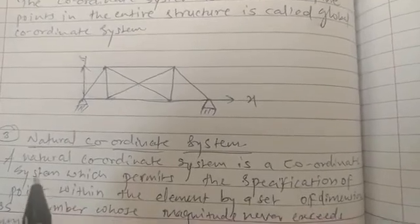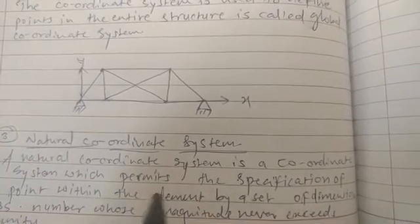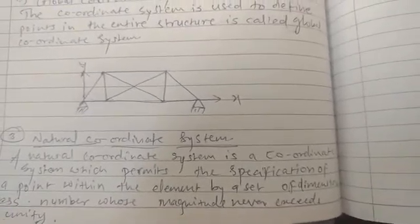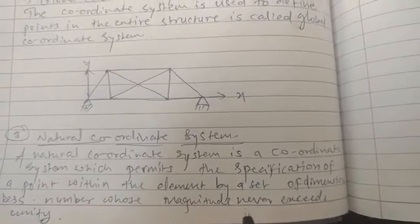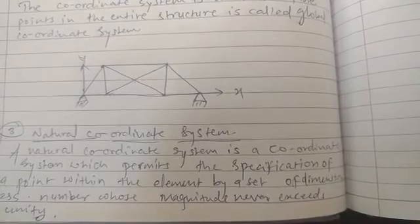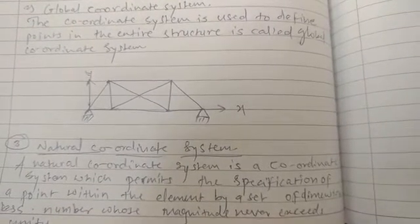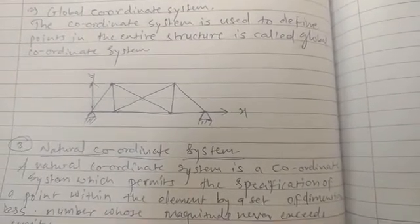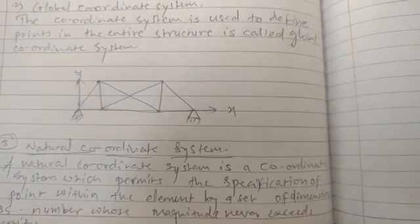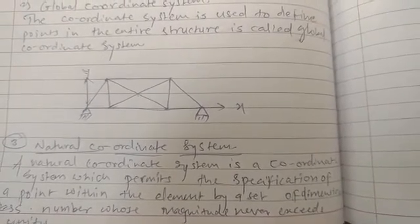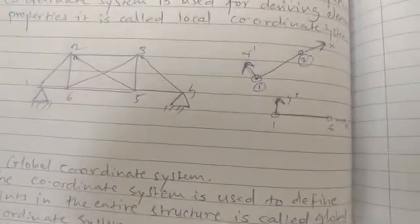Now we will see the third type: natural coordinate system. A natural coordinate system is one which permits the specification of a point within an element by a set of dimensionless numbers whose magnitude never exceeds unity. So when we define any point in an element using dimensionless numbers whose values never exceed unity, that coordinate system is called the natural coordinate system.